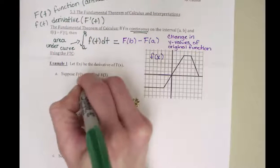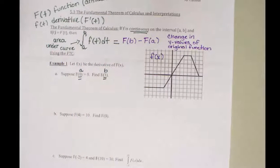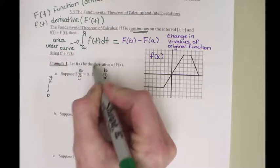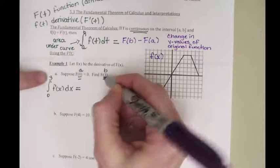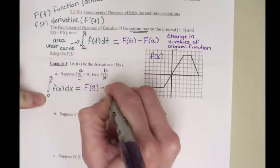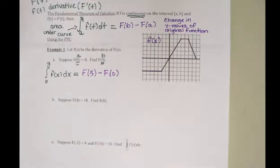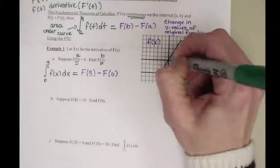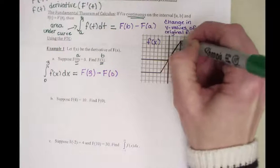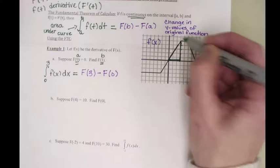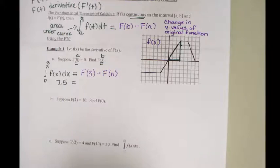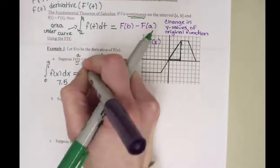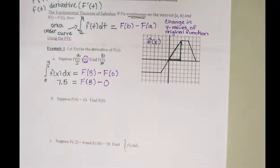The lower x value is always a and the higher x value is always b. So we're going to do an integral from 0 to 3 — our a is 0, our b is 3 — and the inside of the integral is always the derivative, so it's lowercase f of x dx. The fundamental theorem tells us that equals capital F at 3 minus capital F at 0. When we have a graph, we find the area under the curve between 0 and 3 — it's just a little triangle. The area is 1/2 times 3 times 5, which is 7.5. They told us F of 0 is 0, so F of 3 is 7.5.